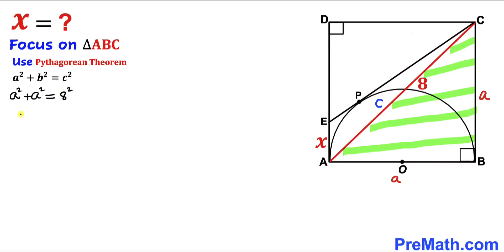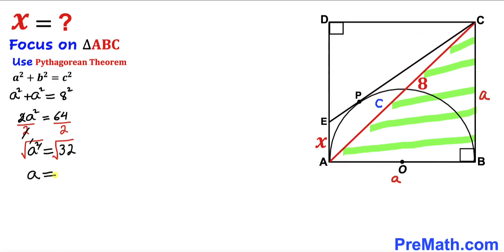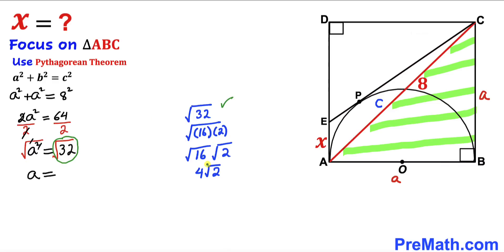Combining like terms on the left: 2 times A squared equals 64. Dividing both sides by 2 gives A squared equals 32. Taking the square root of both sides, A equals the square root of 32, which simplifies to 4 times the square root of 2.